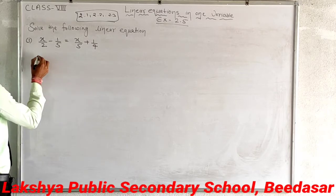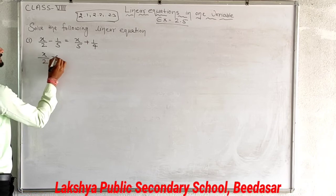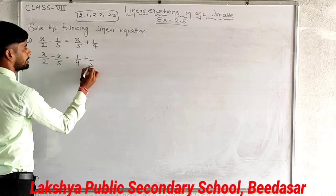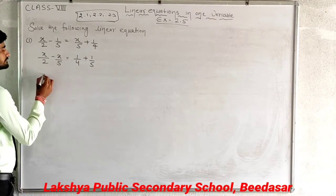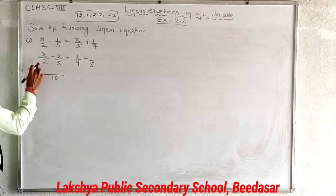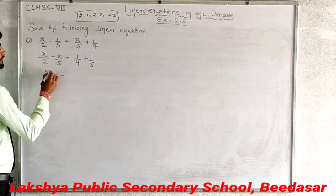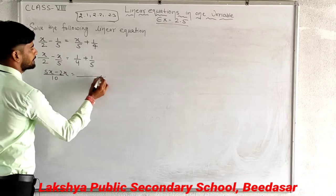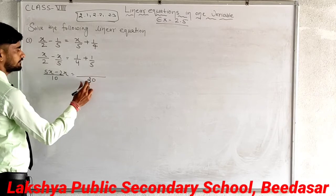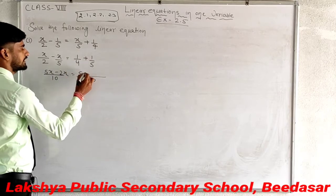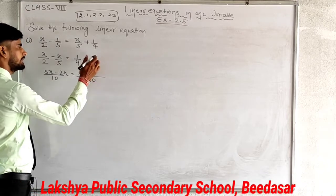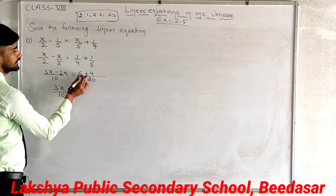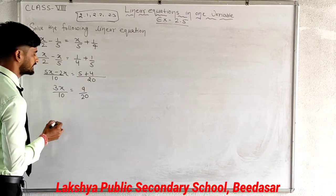By solving the linear equation, first separate the variables using the transposing method. We have x upon 2 minus x upon 5, with coefficients 1 upon 4 plus 1 upon 5. Take the LCM of 2 and 5, which is 10. So 10 divided by 2 is 5, giving 5x; and 10 divided by 5 is 2, giving 2x. On the right side, LCM of 4 and 5 is 20: 20 divided by 4 gives 5, and 20 divided by 5 gives 4. So 5x minus 2x gives 3x upon 10, equal to 5 plus 4, which is 9 upon 20.